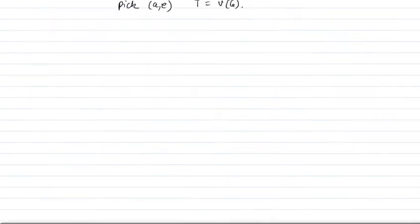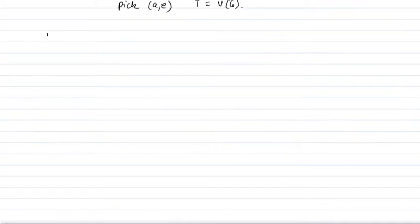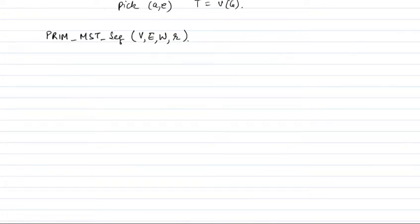We are interested in parallelism, so we are going to look at how we parallelize this. Let's write the algorithm — let's call it Prim's MST — and first let's write the sequential algorithm. What you get as input is V, E, W, and maybe some vertex from which you want to start the Prim's algorithm. First I initialize my tree with this root vertex r, and then I set d[r] to be zero.